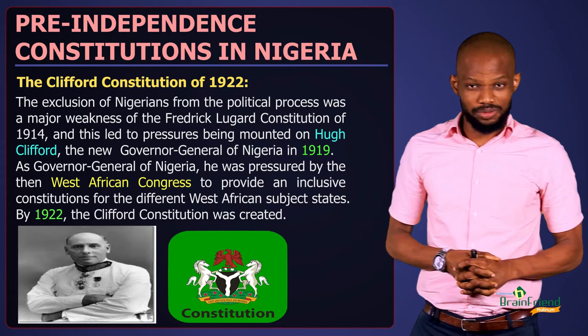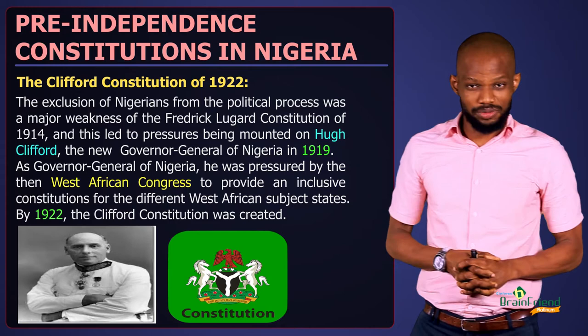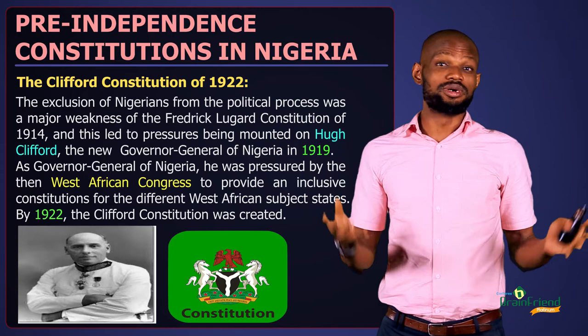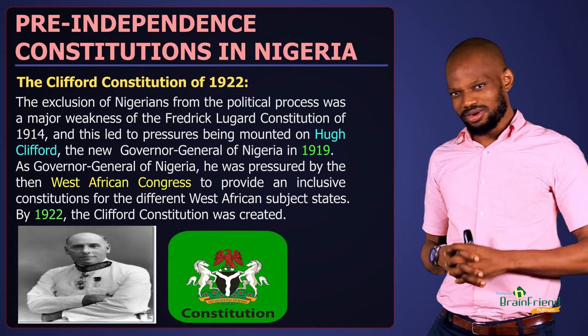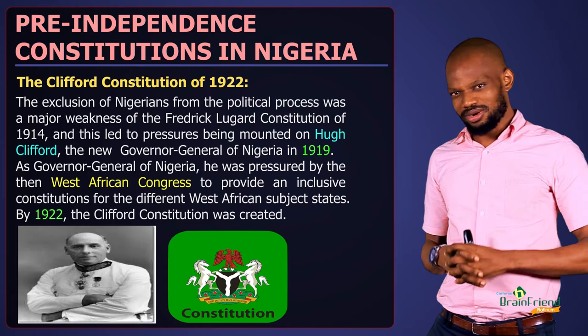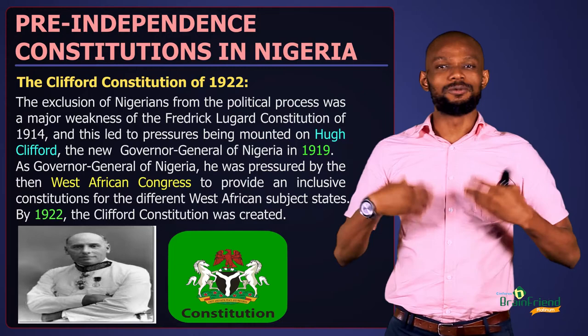The exclusion of Nigerians from the political and decision-making process was the major undoing of the Frederick Lugard Constitution of 1914. To resolve this, Sir Hugh Clifford, pressured by the West African Congress, organized a constitutional conference for people to come and talk about their opinions and aspirations for a new constitution. However, it was not as objective as expected, because after the constitution was drafted, some major features of the 1914 constitution still reflected in the new Clifford Constitution.